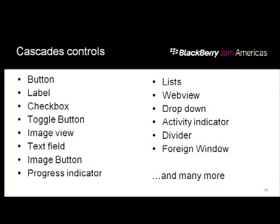We have all kinds of Cascades controls and we keep adding more: buttons, labels, lists, and more advanced controls like a web view. If you want to draw OpenGL code within your app — like a fancy clock — you can create a foreign window within Cascades. There's also a text field where you can specify the format for input, like an email address. This is not the entire list, just a representative sample.